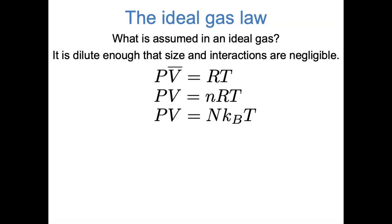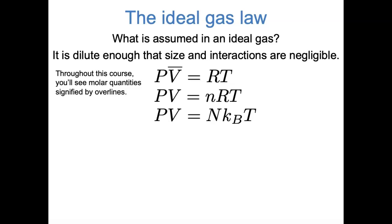These equations are all just different forms of the ideal gas law. PV equals nRT is the equation introduced in general chemistry, where P is pressure, V is volume, lowercase n is the number of moles, R is the gas constant, and T is temperature. The first form expresses volume as molar volume — V with an overline means volume per mole. The bottom equation, PV equals capital N times kB times T, is the single particle version, where capital N is the number of particles and kB is the Boltzmann constant.